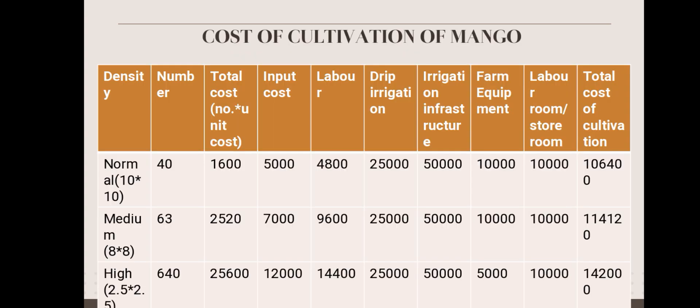Here, cost of cultivation of mango is tabulated on the basis of its density of plantation. For normal density, medium density, and high density plantation, the total cost of cultivation is calculated. For normal density, number of plants is 40, total cost about 1,600, input cost 5,000, labor cost 4,800. The irrigation system used is drip irrigation at 25,000, irrigation infrastructure 15,000, farm equipment 10,000, store room 10,000, and the total cost is calculated as one lakh six thousand four hundred.